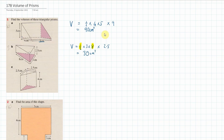For number 1c, the volume of the triangular prism is half times the base times the height times the depth. The base is 2.5, the height is 2.5, and the depth is 4. We can multiply the half by 4 to get 2, then 2 times 2.5 is 5, and 5 times 2.5: 5 times 2 is 10, plus 5 times 0.5 is 2.5, giving 12.5 centimeters cubed. You can check this on your calculator.